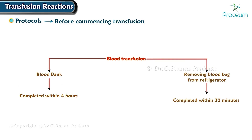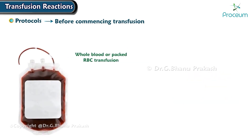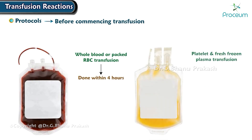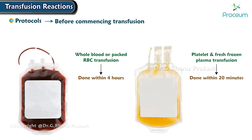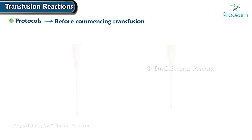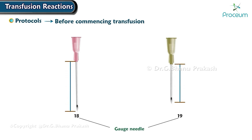To avoid risk of bacterial infections, whole blood or packed RBC transfusion must be done within four hours. Platelet and fresh frozen plasma transfusion must be done within 20 minutes. It is recommended to use an 18 to 19 gauge needle for transfusion, and the transfusion set should have a filter of 170 micrometer pore size.